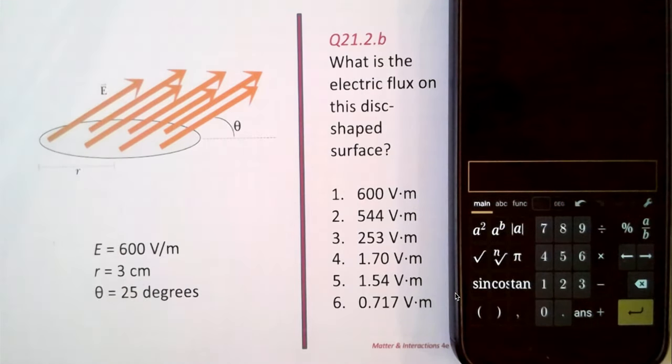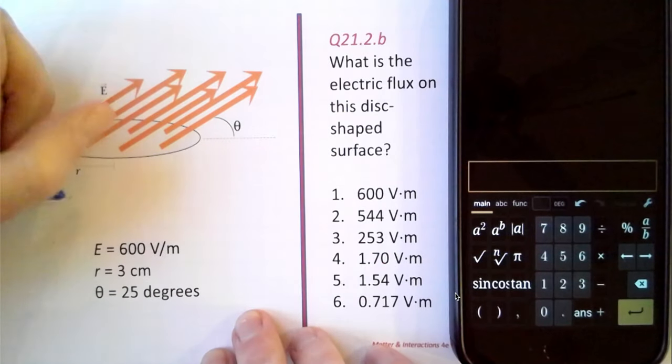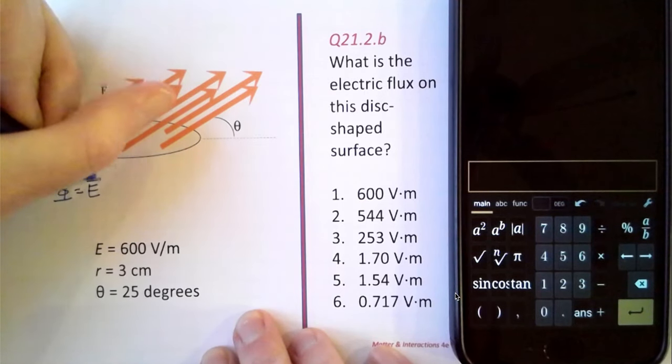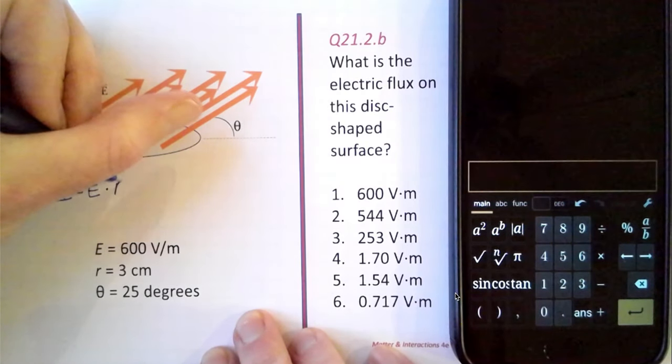What is the flux on this disc-shaped surface? Well, once again, flux is the electric field times the area.